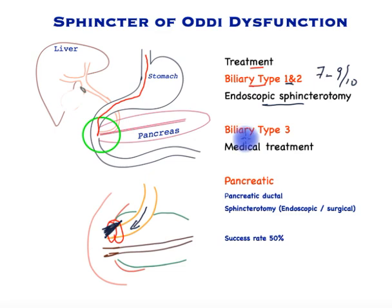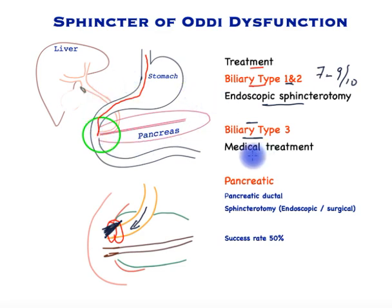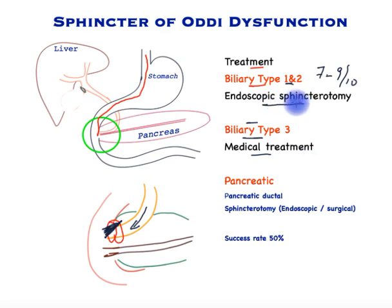In the biliary type 3 sphincter of Oddi dysfunction — which is not very typical — the patient may have biliary type pain but none of the other features. Only medical treatment is indicated, and a number of drugs which include painkillers, calcium channel blockers and other agents to reduce the spasm are utilized. Endoscopic sphincterotomy has no function in this type.